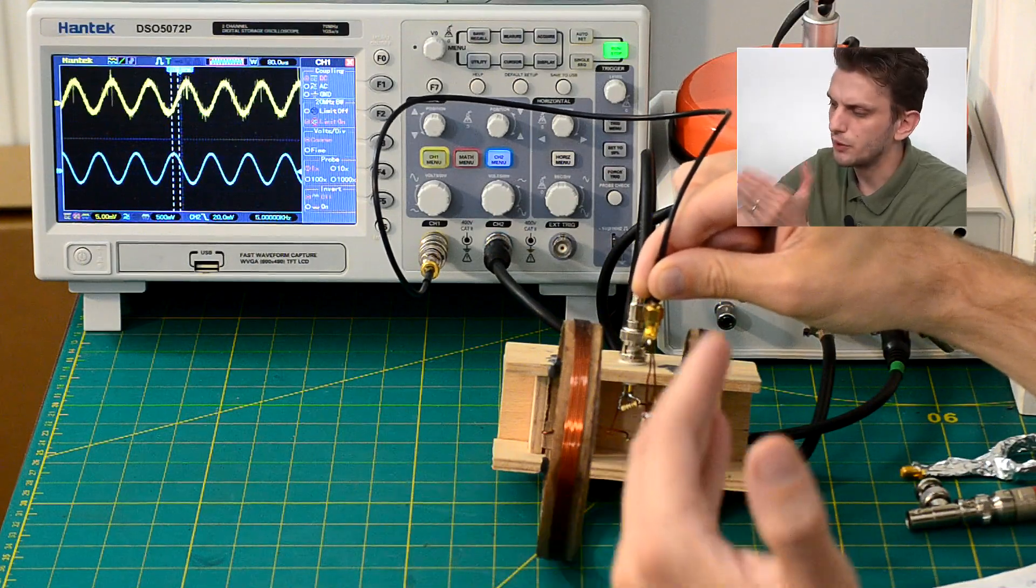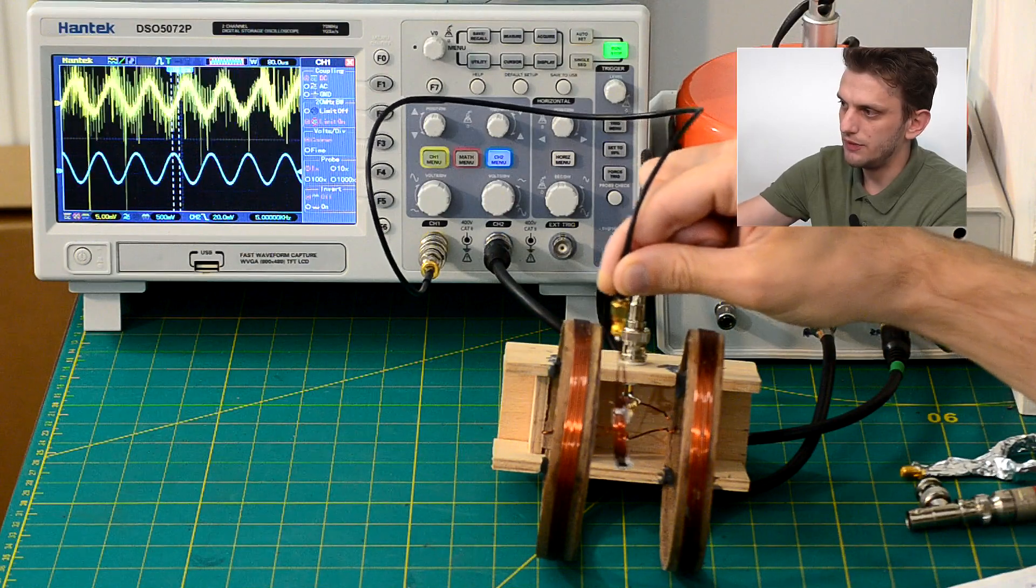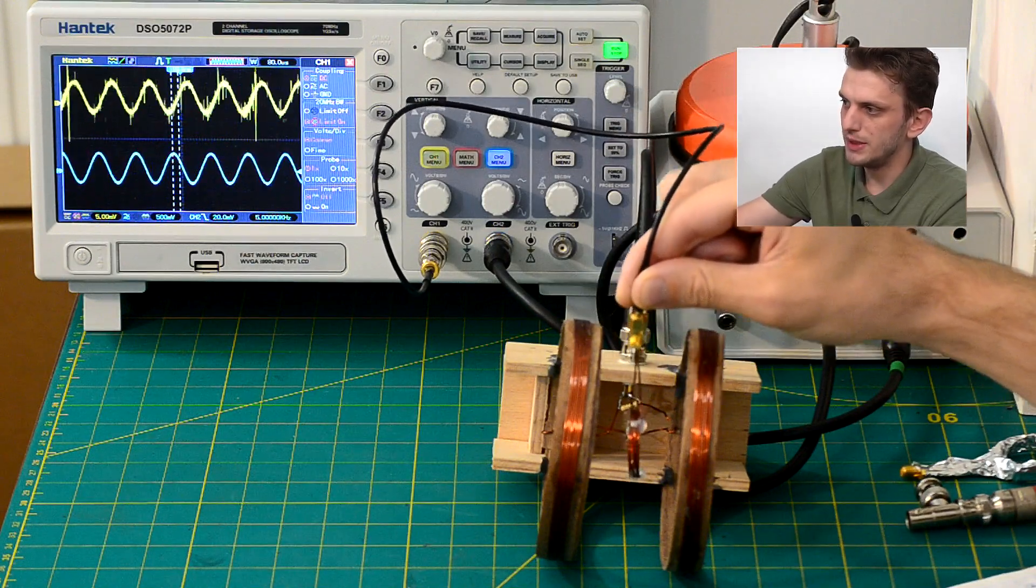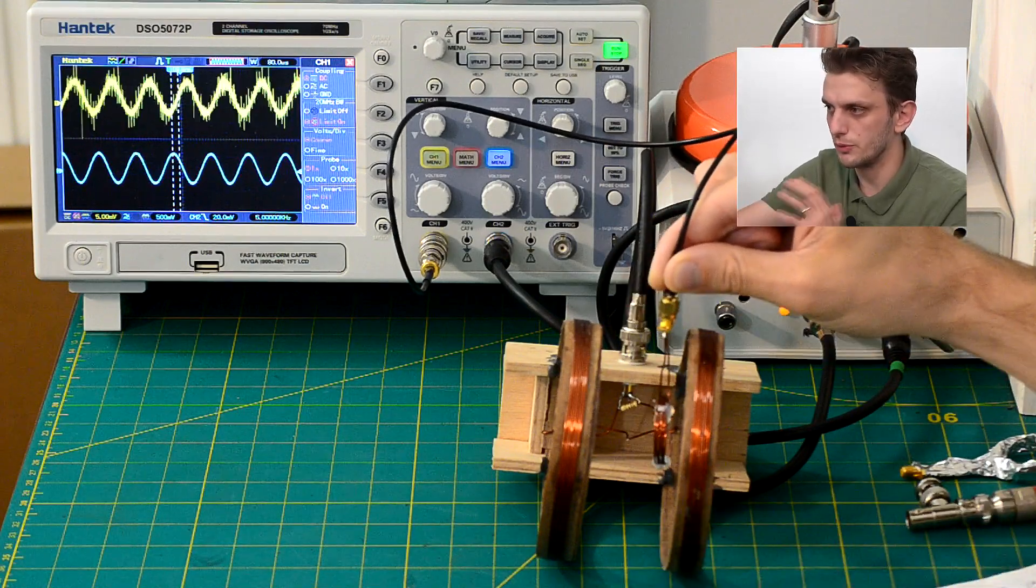Now ignoring the noise, regardless of where the probe is sitting inside of the coil, so if it's to the left, to the right, higher, lower, it's basically got the same amplitude. So we got our fairly uniform magnetic field.